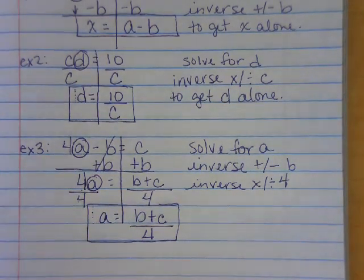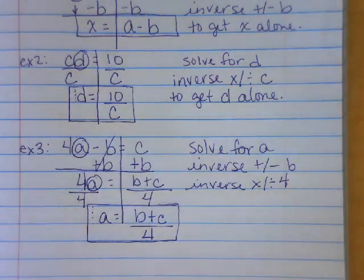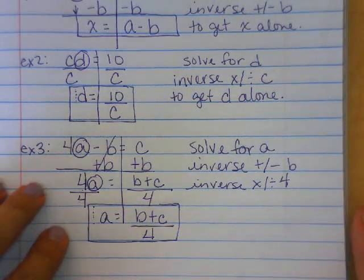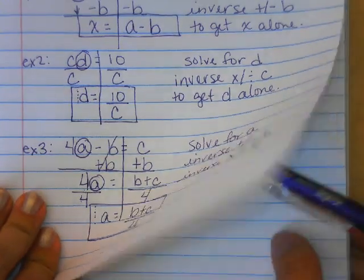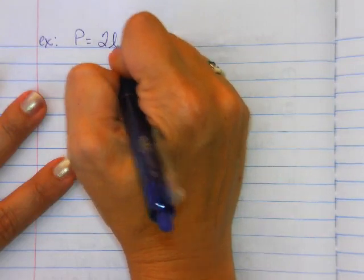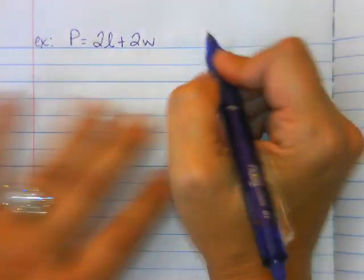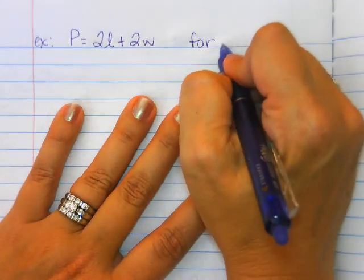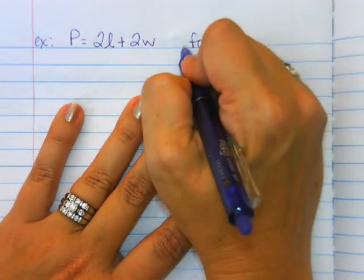We start looking at literal equations when we start doing equations for formulas, most likely, or for science. So this next example is going to be a formula you are familiar with. It is a formula for perimeter. So when we do the formula for perimeter, it is going to be P equals 2l plus 2w, and I'm going to ask you, if we know a perimeter, we know a length, I'm going to ask you to solve for w.